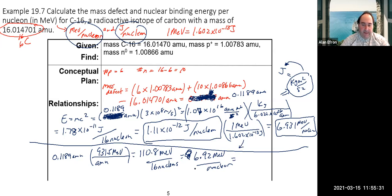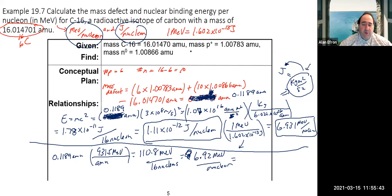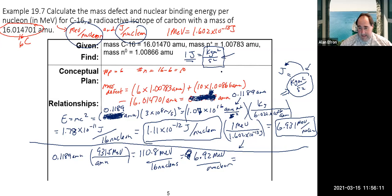Regarding units: one joule equals one kg·m²/s². When we use Einstein's equation we get amu·m²/s², so we need that conversion factor to get to kilograms. That's just a relationship — one joule equals those units. That's how we convert between them. Any other questions?